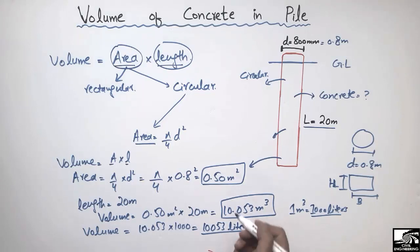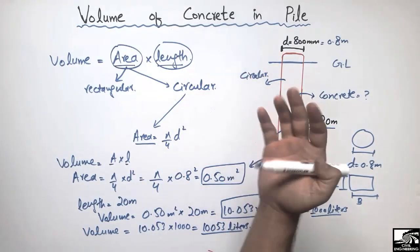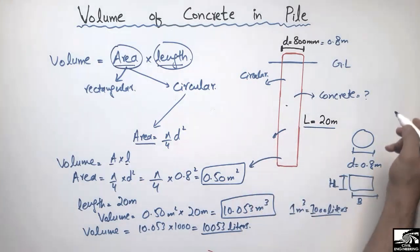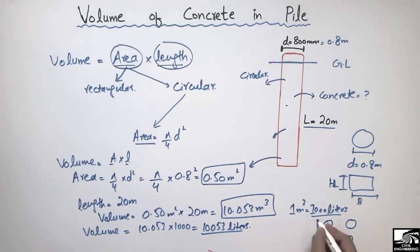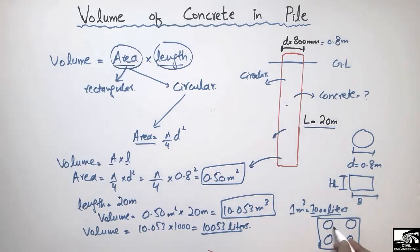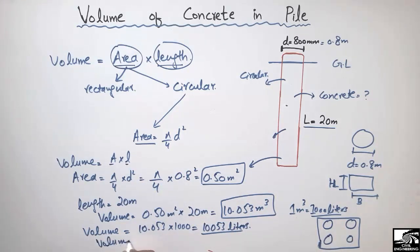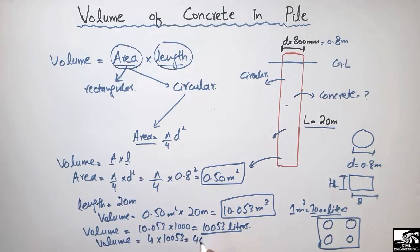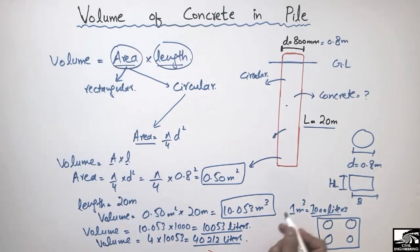Now we can also calculate for a number of piles. For example, if there are four piles — pile one, pile two, pile three, and pile four — all having a length of 20 meters and diameter of 800 mm, the total volume is simply 4 × 10,053, which gives us 40,212 liters. So this is the volume of concrete for four piles with a length of 20 meters.